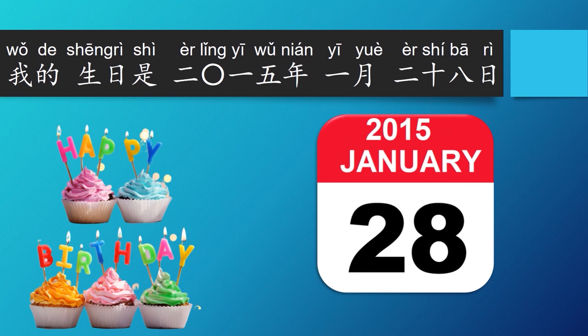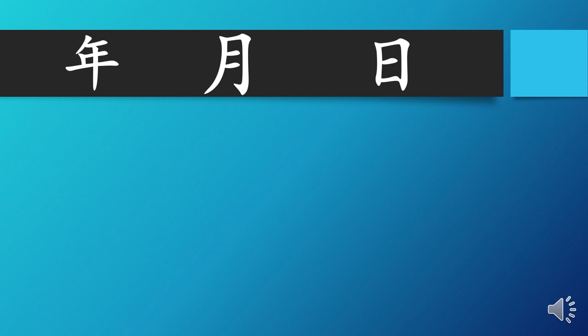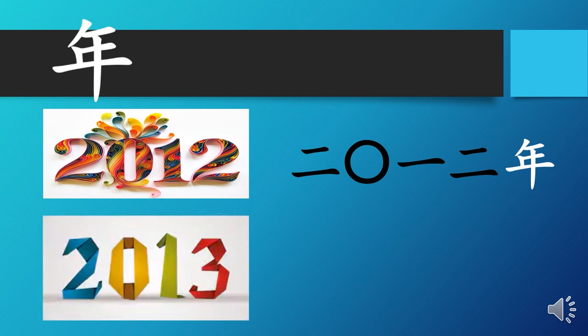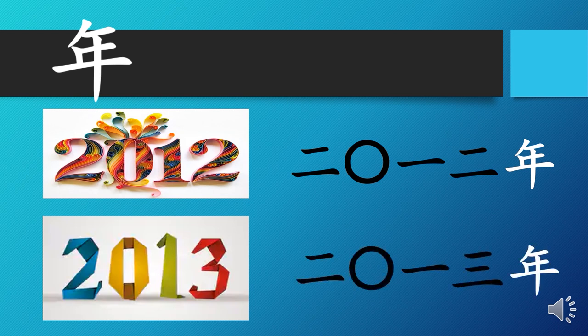我的生日是二零一五年一月二十八日。My birthday is on January 28th, 2015. The format for Chinese dates is always 年 (year), then 月 (month), then 日 (day). When we say a year in Chinese, we say it digit by digit. So 2012 is 二零一二年, and 2013 is 二零一三年.